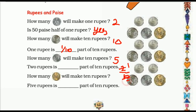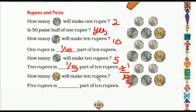Five twos are ten, that means one fifth part of ten rupees. So two rupees is one fifth part of ten rupees.